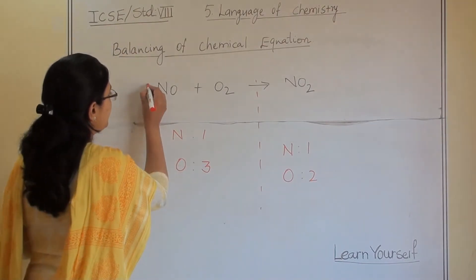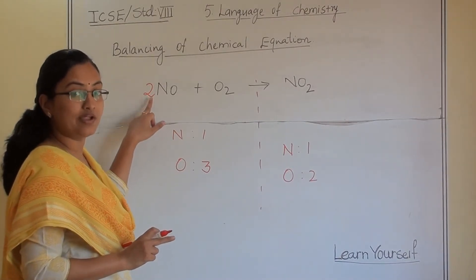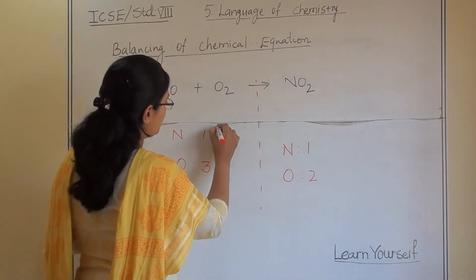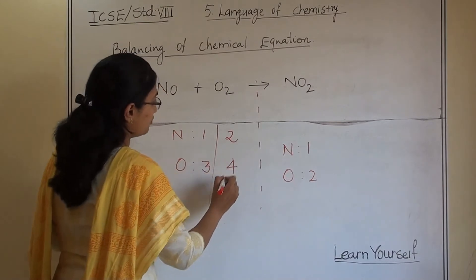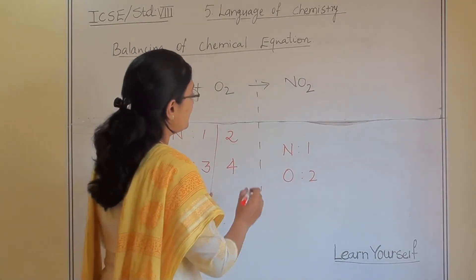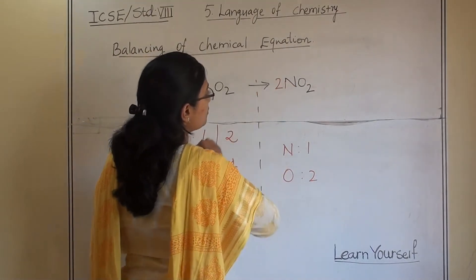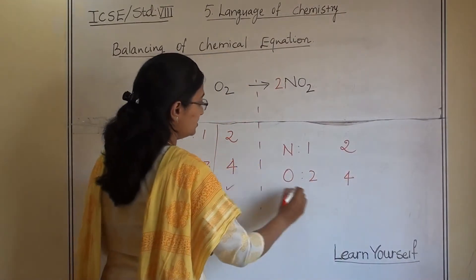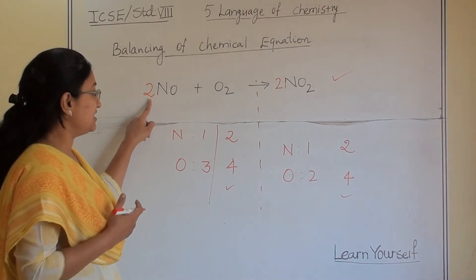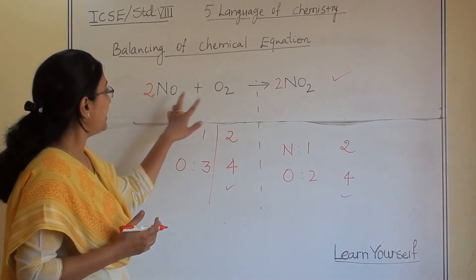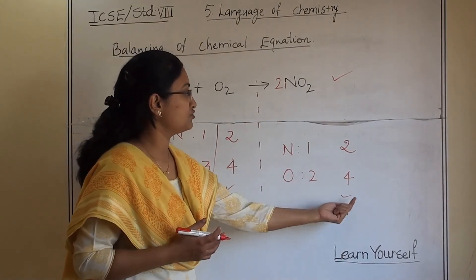We can add any number of molecules at the front — we cannot add individual atoms. If we add a coefficient of 2 in front of NO on the reactant side, nitrogen becomes two and oxygen becomes two plus two, which is four. On the product side, if we add a coefficient of 2 in front of NO₂, we get two nitrogen and four oxygen. Now both sides match: 2NO + O₂ → 2NO₂. The equation is balanced.